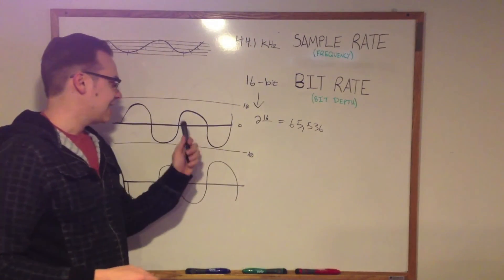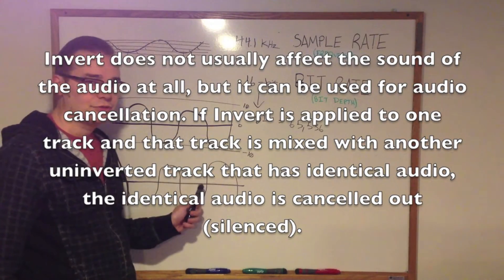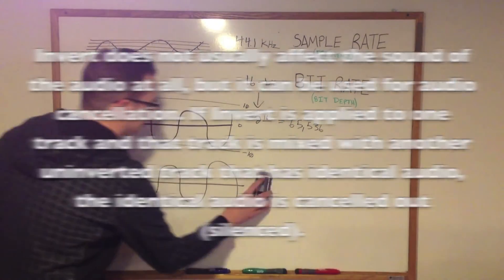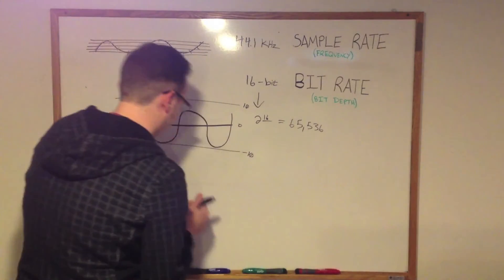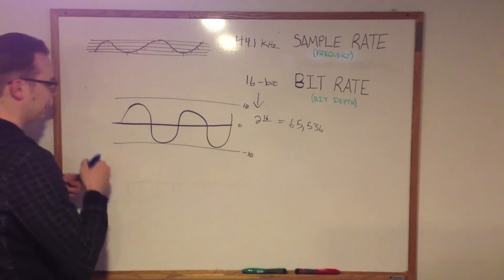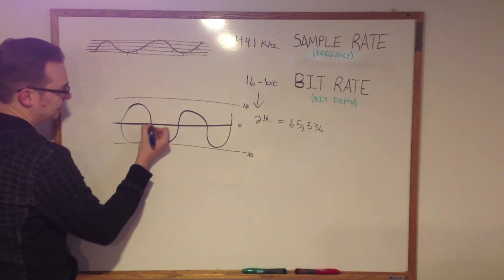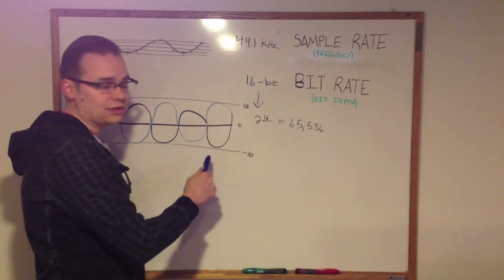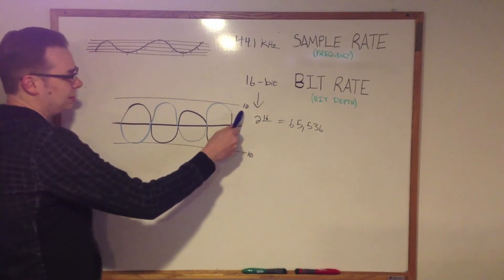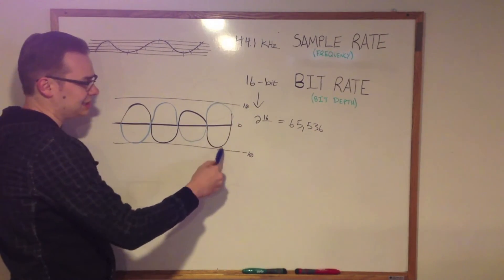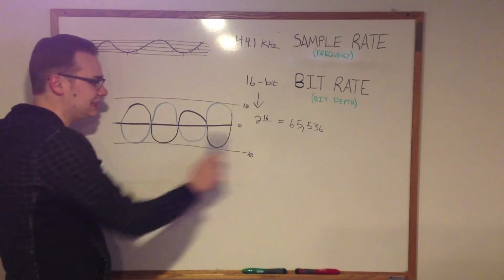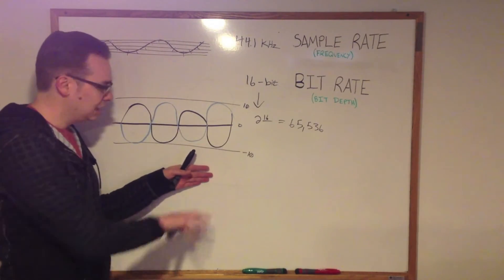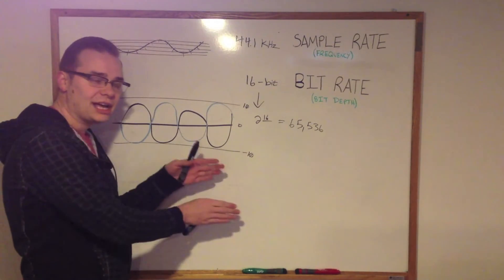This inverted waveform sounds exactly like the original — you're not going to be able to tell the difference, they're just slightly shifted. But if you overlay them — if you take this inverted waveform and mix it with the original — what you end up with is algebra, a math problem. You have your 10s and your minus 10s, these are exact opposites canceling out, and when this happens you end up with 0. You have silence. So if you take one copy of a song, take another copy and invert it, and play them at the same time, you'll hear absolutely nothing.